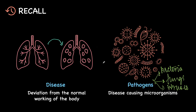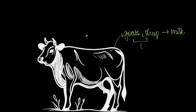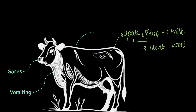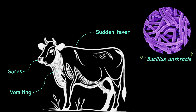But here's something interesting — signs of sickness look very different in animals and plants when compared to us. So let's understand this with some examples. Cows are animals which are commonly seen in India, and along with goats and sheep, they are mainly reared for their milk. From goats and sheep, we also obtain meat and wool. Now sometimes these animals can develop swelling under their skin causing skin sores, vomiting or even sudden fever. This happens when a pathogen called Bacillus anthracis invades the body, causing a disease called anthrax.